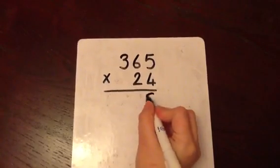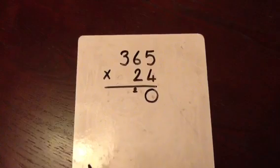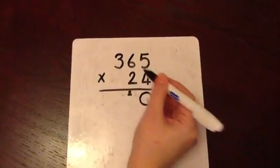So we begin by multiplying the units. 4 multiplied by 5 is 20. We put the 0 in the units column and carry the 2 across.